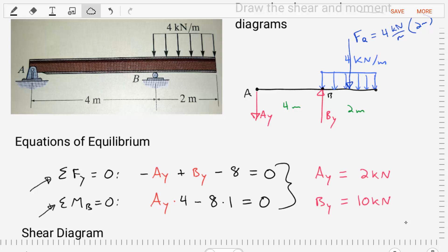Okay, so now we have two equations with two unknowns. So we can rearrange and solve for our unknowns. If we take the second equation, we'll find AY is equal to 2 kN. If we plug that in to the first equation, we can solve for BY, which is equal to 10 kN.